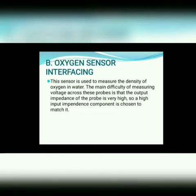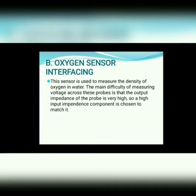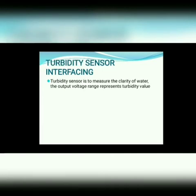Next is oxygen sensor interfacing. This sensor is used to measure the density of oxygen in water. The main difficulty of measuring voltage across these probes is that the output impedance of the probe is very high, so a high input impedance component is chosen to match it. Next is turbidity sensor interfacing.